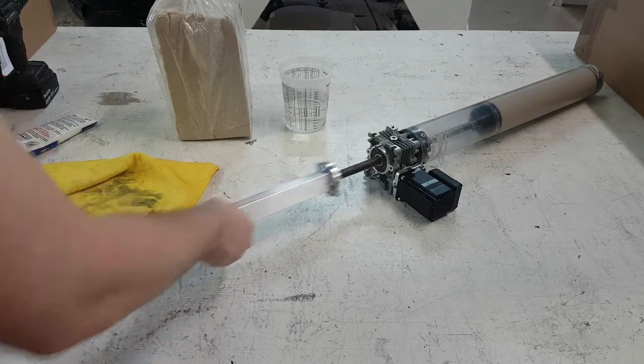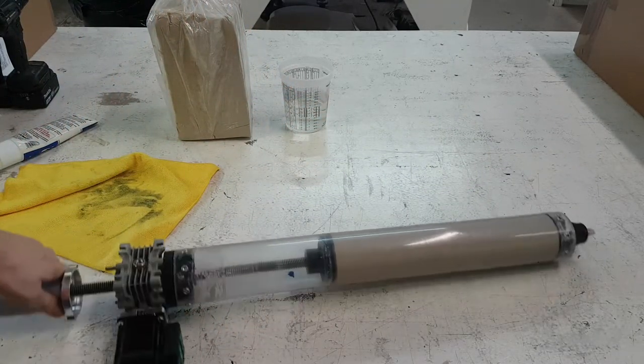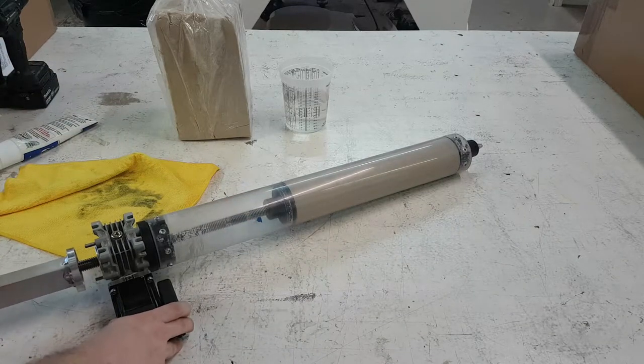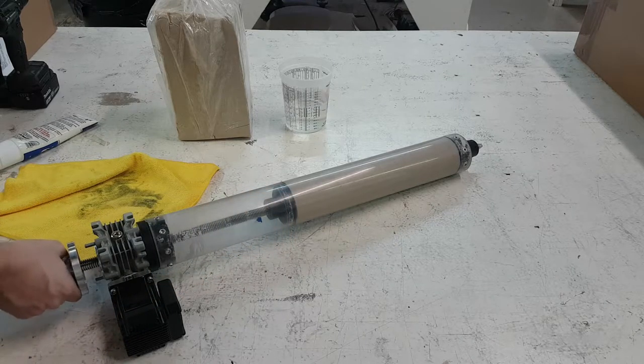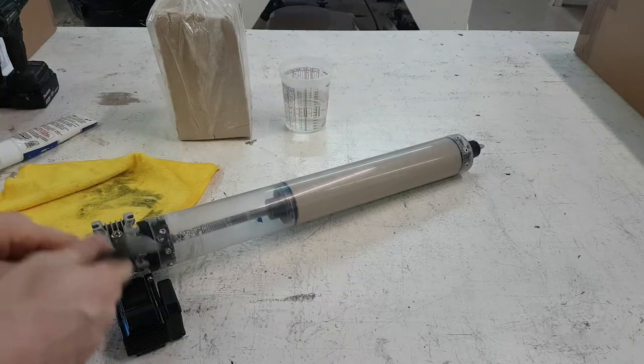So this slides on very nice and smooth. Now we're going to manually prime our extruder. Once the Acme screw is pushing against the piston, if you manually turn this and prime it, the clay will start to come out the other end.